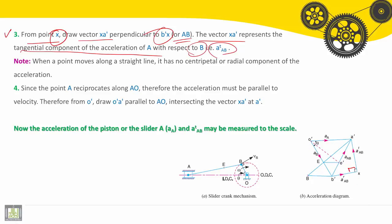As a note: when a point moves along a straight line — translation, for example — it has no centripetal, no radial component of the acceleration.